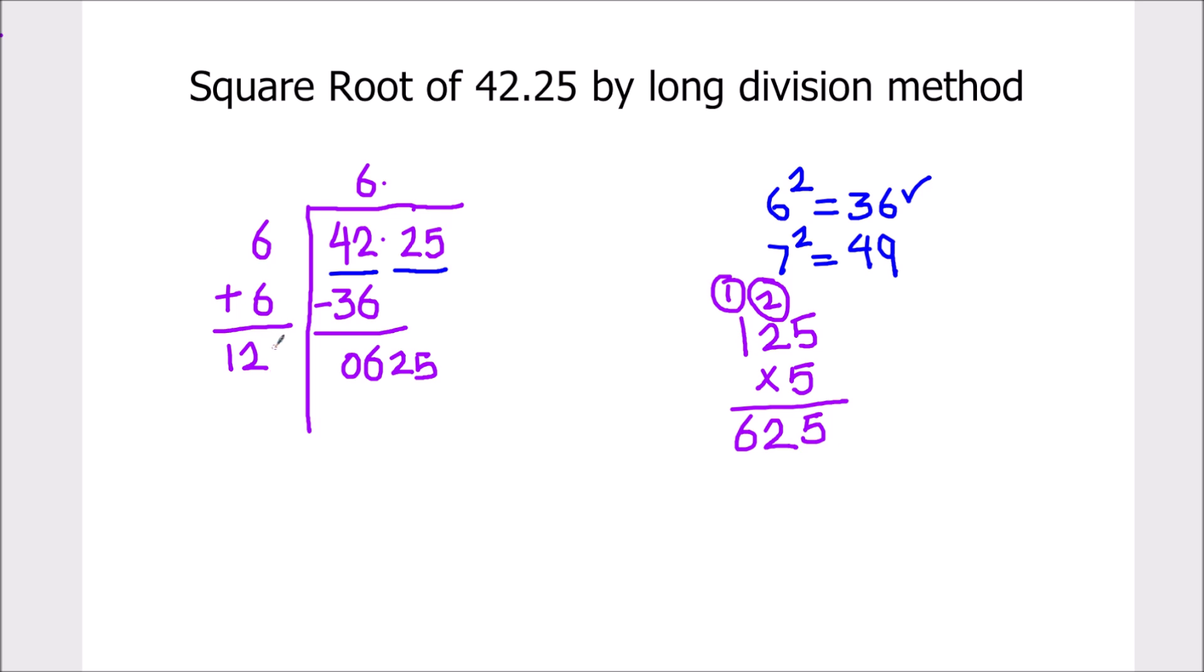The new digit which we are going to annex here is 5, and the same digit will go in the quotient. The product is 625. Subtract the two, we'll get the remainder as 0, and there are no new periods to drop down. So we'll stop here.